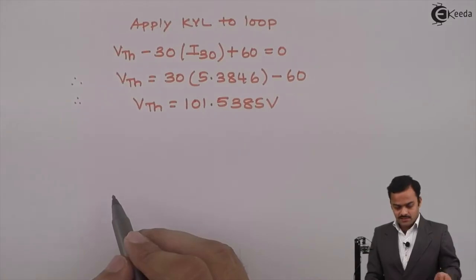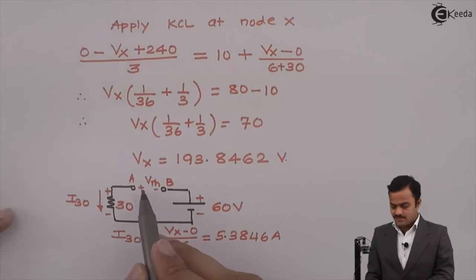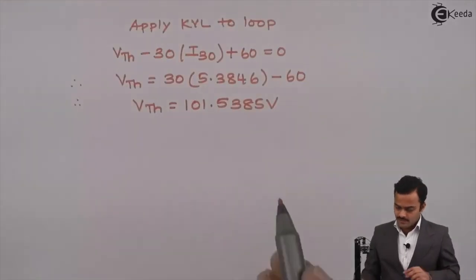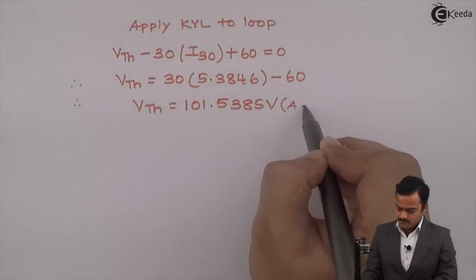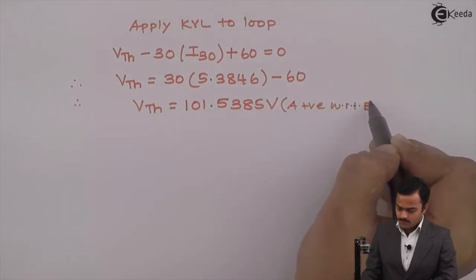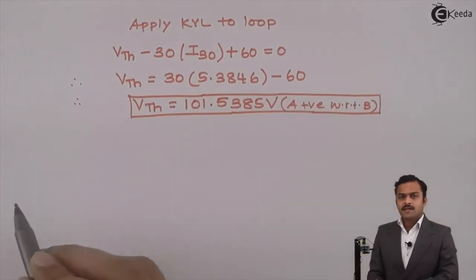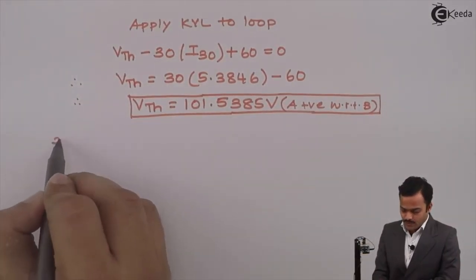Positive answer that means whatever assumption we have made as far as polarity is concerned is correct. It is A positive with respect to B. Step number 2, calculation of RTH.